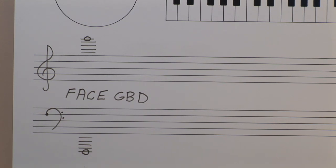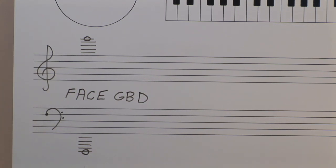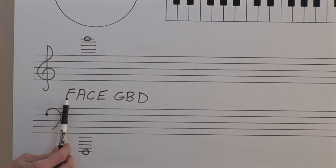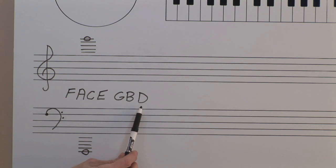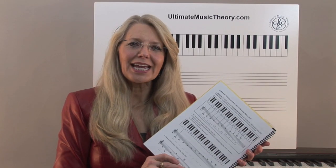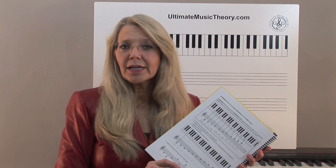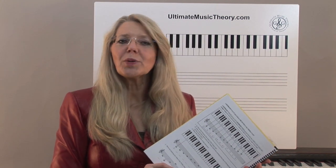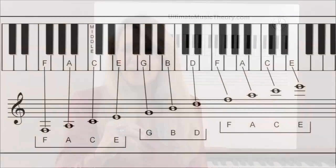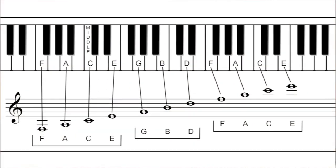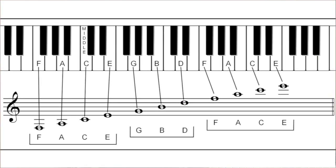Here's a UMT tip. For both the line notes and the space notes, in the treble clef and the bass clef, we use the same landmark note pattern of F-A-C-E and G-B-D. On page 8 of the Basic Rudiments workbook, you will see this pattern is used to identify line notes in the treble clef, beginning with three ledger lines below the staff as F-A-C-E, G-B-D and F-A-C-E.